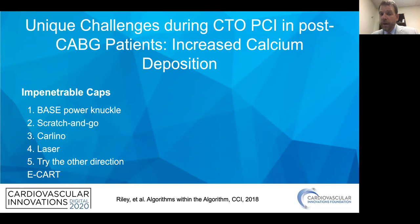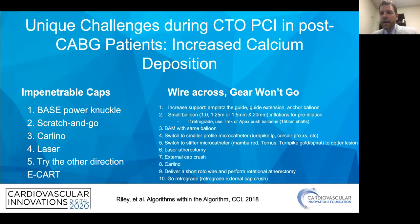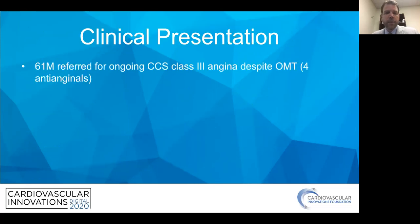Here are some tools for dealing with impenetrable caps during CTO-PCI: everything from BASE to Carlino, scratch and go, and laser. When wire crosses but a microcatheter won't advance, the algorithm includes small balloons, BAM, laser, external cap press, et cetera — all explained in the algorithms within the algorithms paper we published.